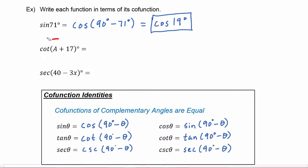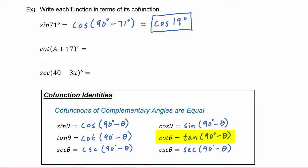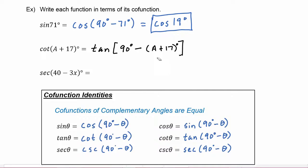The next one: we have cotangent of the quantity (a + 17) degrees. Using our co-function identities, that's going to be the tangent of 90 degrees minus the angle (a + 17 degrees). Notice we had to put that in parentheses. So this becomes tangent of 90 degrees minus a minus 17 degrees, which simplifies to tangent of (73 degrees minus a).